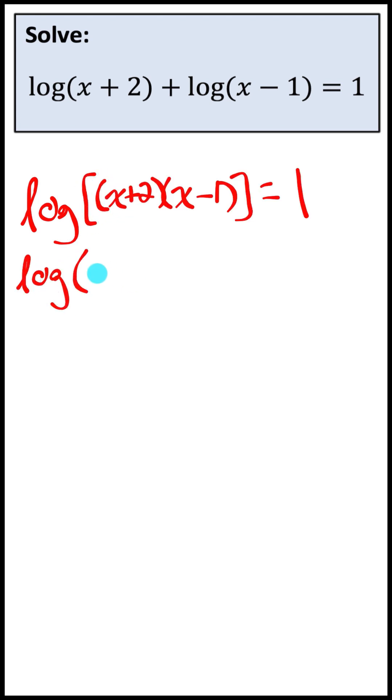And if I were to multiply those arguments, I would get x squared plus x minus two. And when we have a logarithmic expression equal to a constant, I can rewrite it in exponential form.